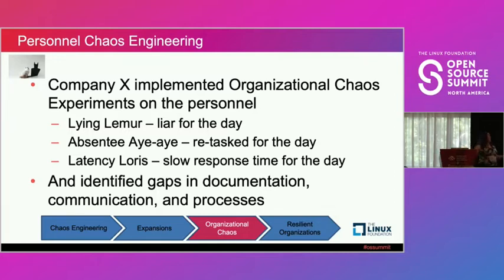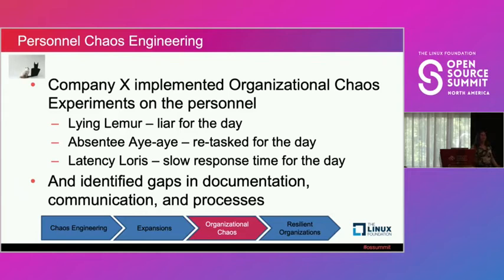When Company X ran some of these personnel experiments, they identified things about the facility access process that weren't well documented. Some steps in the process were opaque and only one person really knew how to do them. Communication wasn't as effective as it should have been — there was no way to notify people that something was messed up or that things weren't progressing as needed. And the processes themselves were not optimal — there were steps in there that probably needed to be resolved and cleaned up.